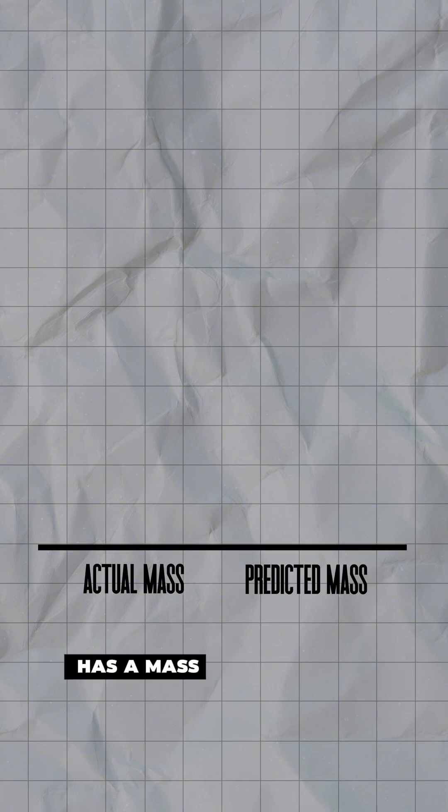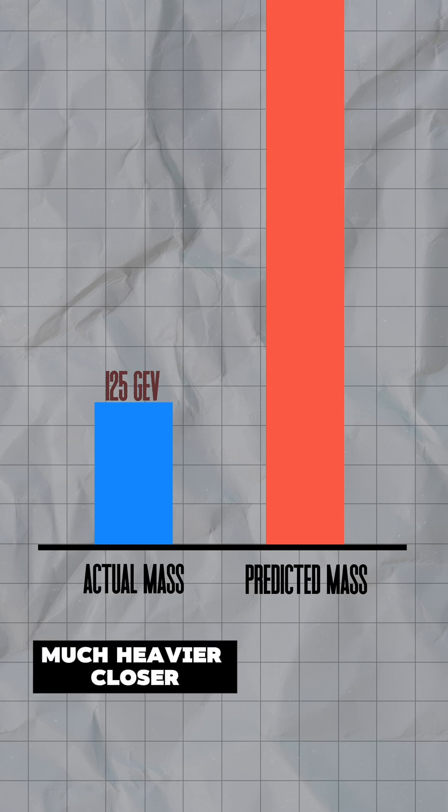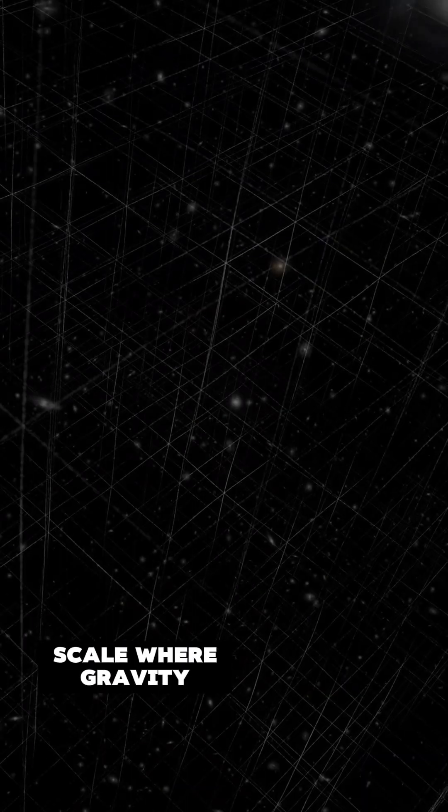The Higgs boson has a mass of about 125 gigaelectron volts, but quantum mechanics suggest that it should be much, much heavier, closer to the Planck scale, where gravity dominates.